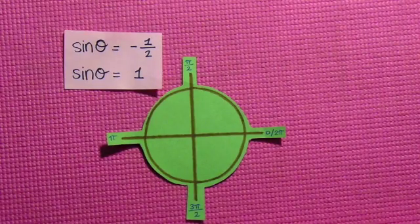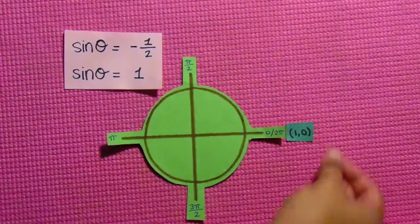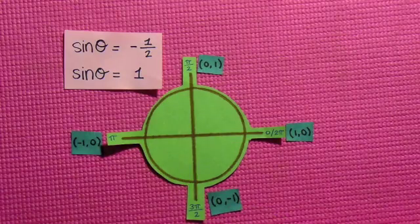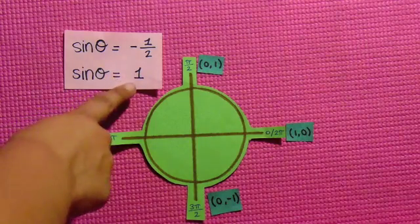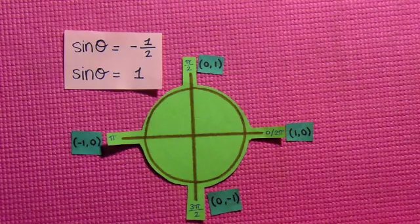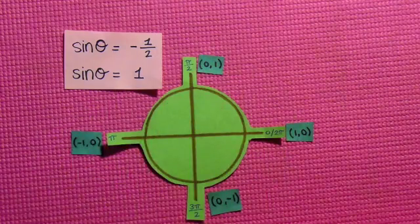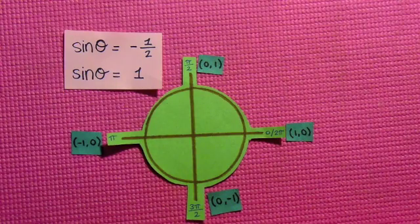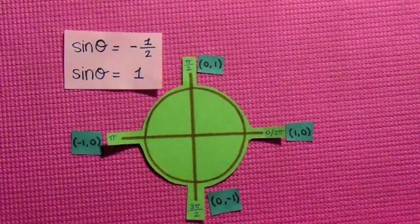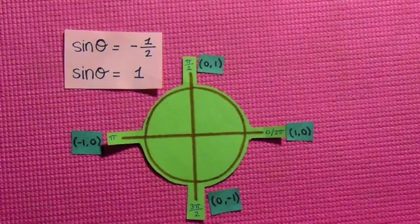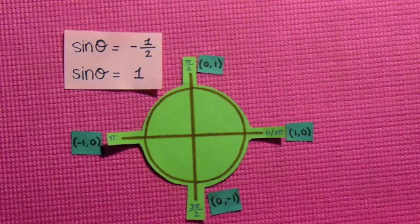So now we can use the unit circle to find θ. First, we can label the unit circle with coordinates. We can find sinθ equals 1 first. To do this, we should remember that sin is the y value of a coordinate. We can look around the whole circle and look for coordinates that have 1 as their y coordinate. (0,1) has 1 as its y coordinate. So the answer for this question is π/2 because π/2 is the same as (0,1).